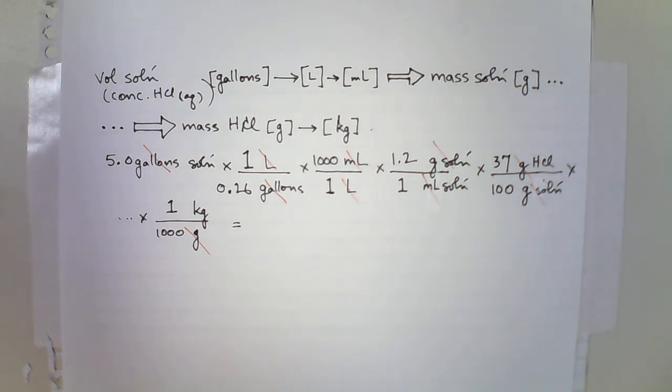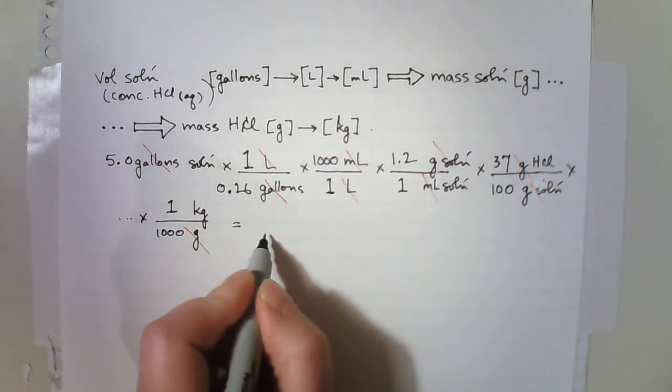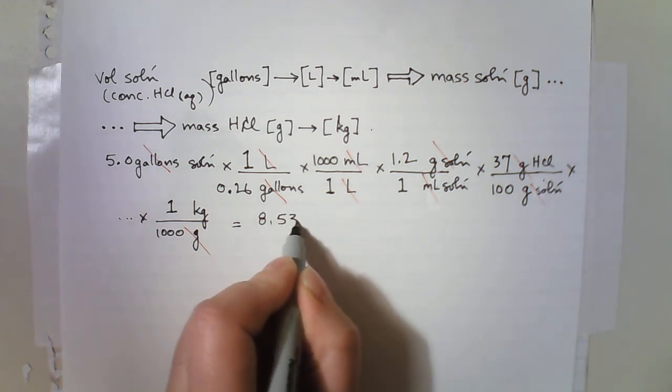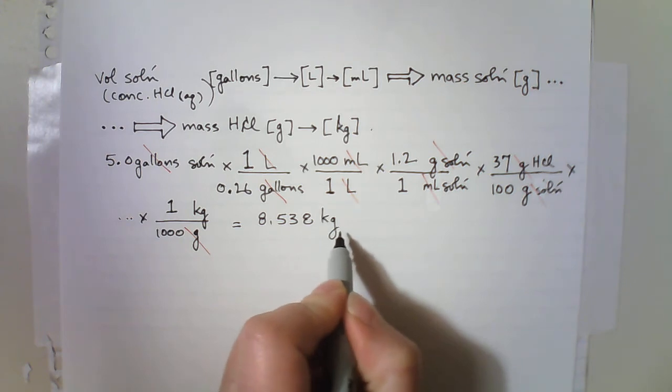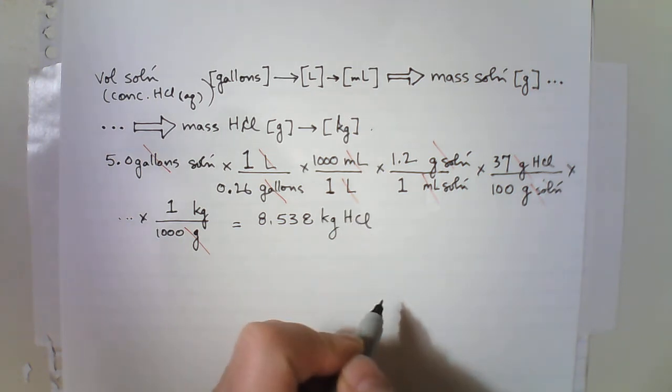So we have 5.0 times 1,000 times 1.2 times 37. And that's divided by 0.26, and divide that by 100 and divide that by 1,000. And we have an answer of 8.538 kilograms HCl.